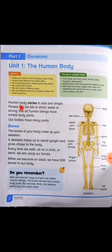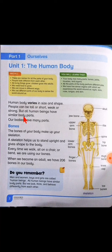Human body varies in size and shape. Pupils can be tall or short, weak or strong, but all human beings have similar body parts.